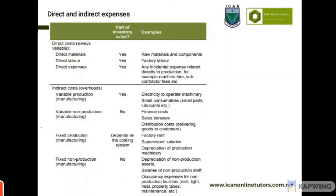Direct materials are part of inventory value. Examples of direct materials include raw materials and components. We also have direct labor, which is also part of inventory value and part of the cost of inventory. Direct labor refers to the amount of money paid to those who are actually in the production process — the wages given to workers in the factory working on that particular product.